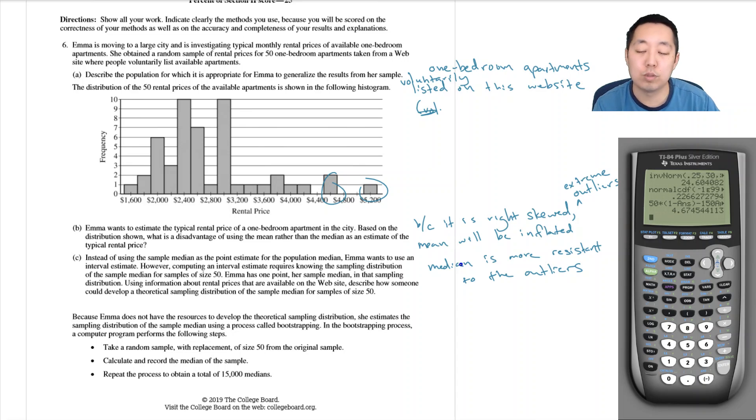What you would do is repeatedly randomly select 50 apartments and calculate the median.